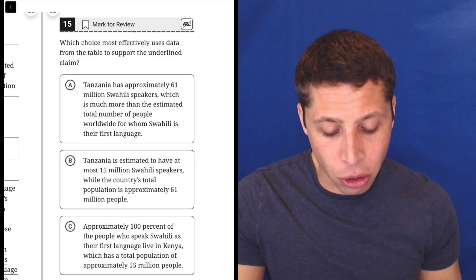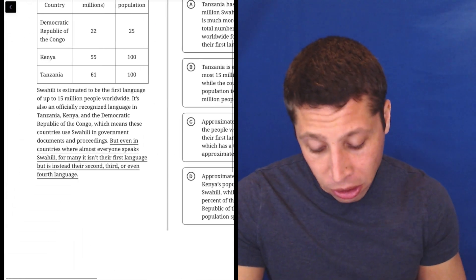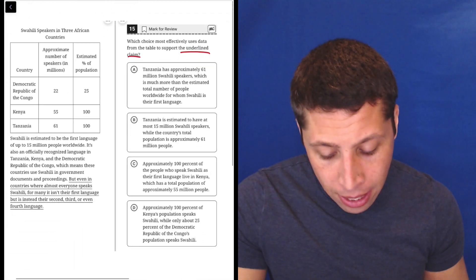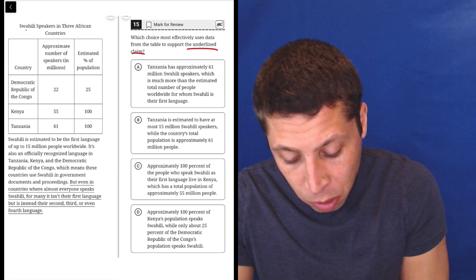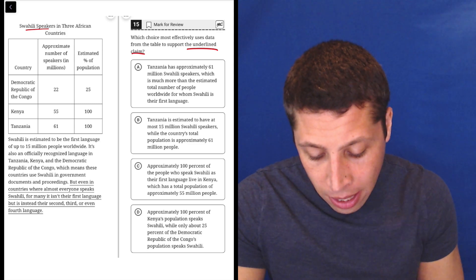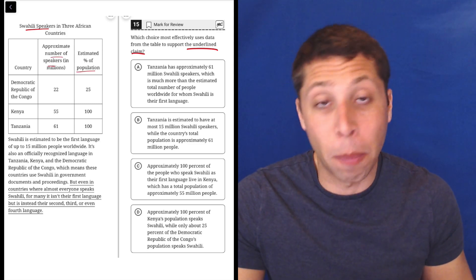So in this case, they want us to use data from this table to support the underlying claim. So there's a claim here, but again, let's not read it yet. Let's just go right to the chart and compare that to the choices. So the chart tells me the Swahili speakers in three African countries. It tells us how many people are speaking Swahili in each of those countries and what percent of the population that is.